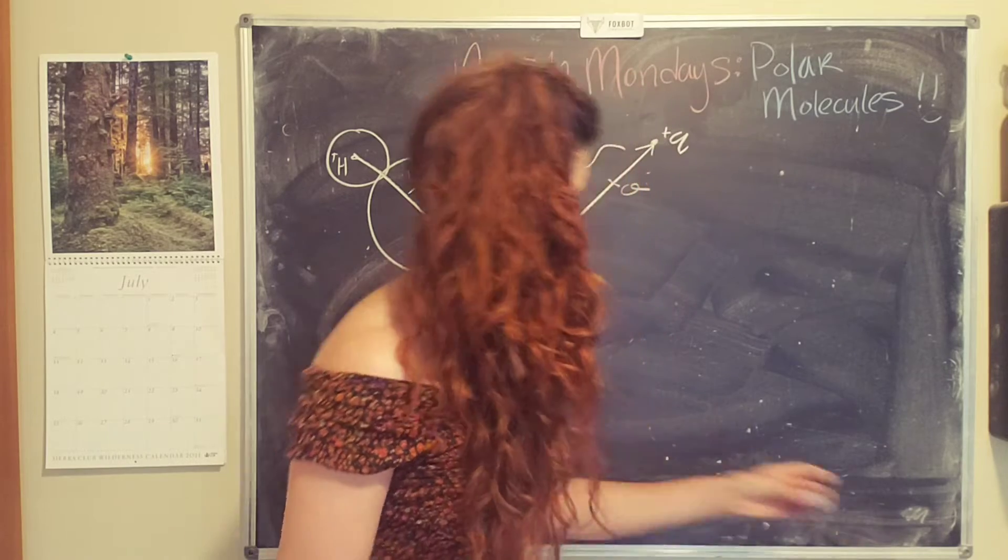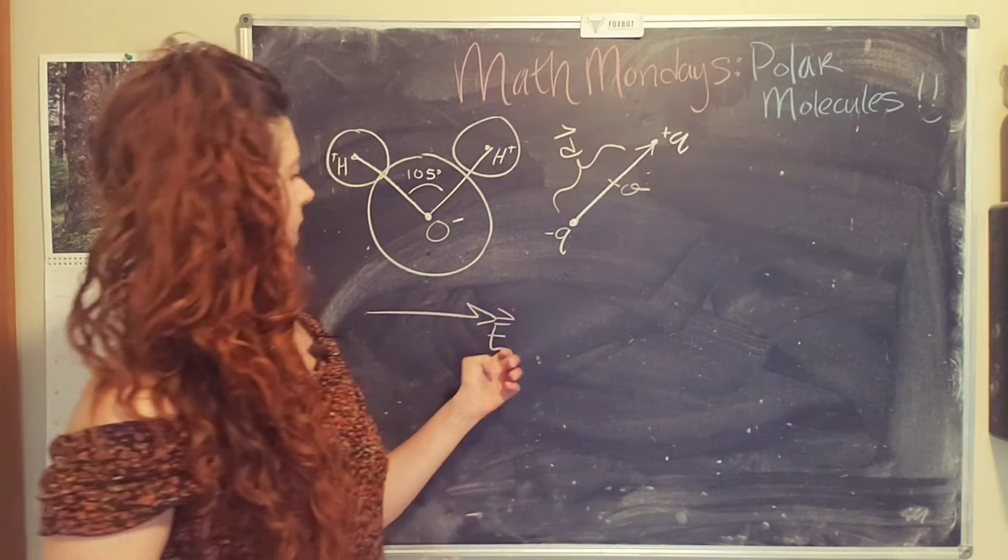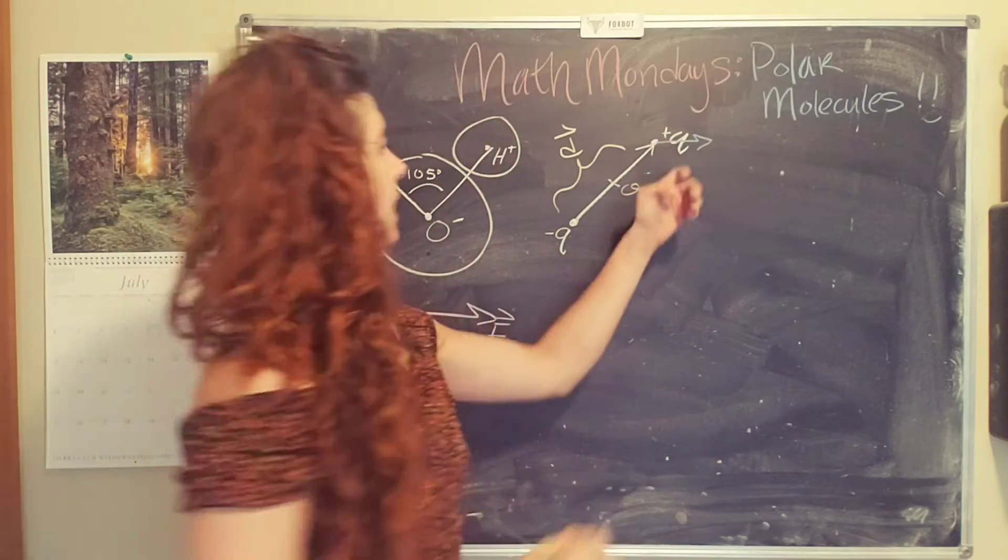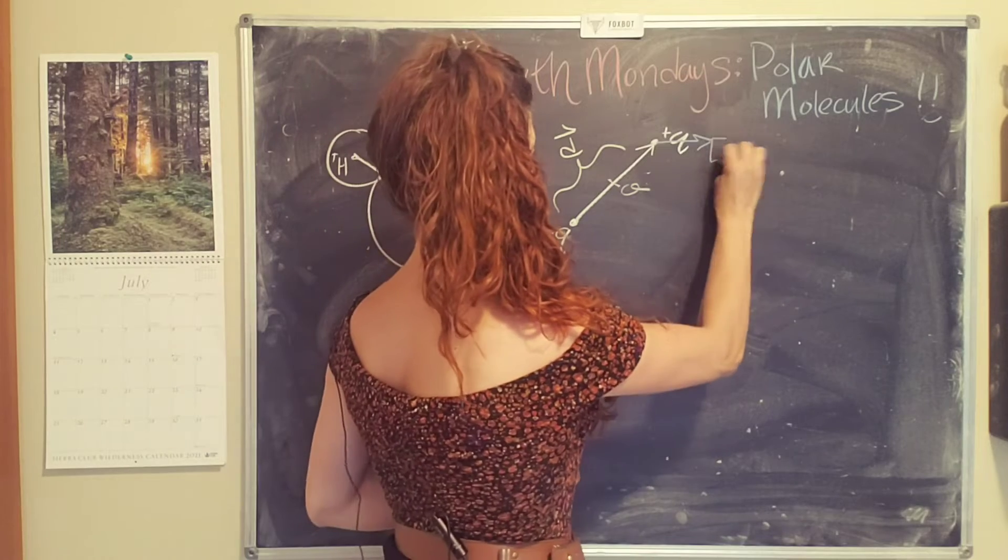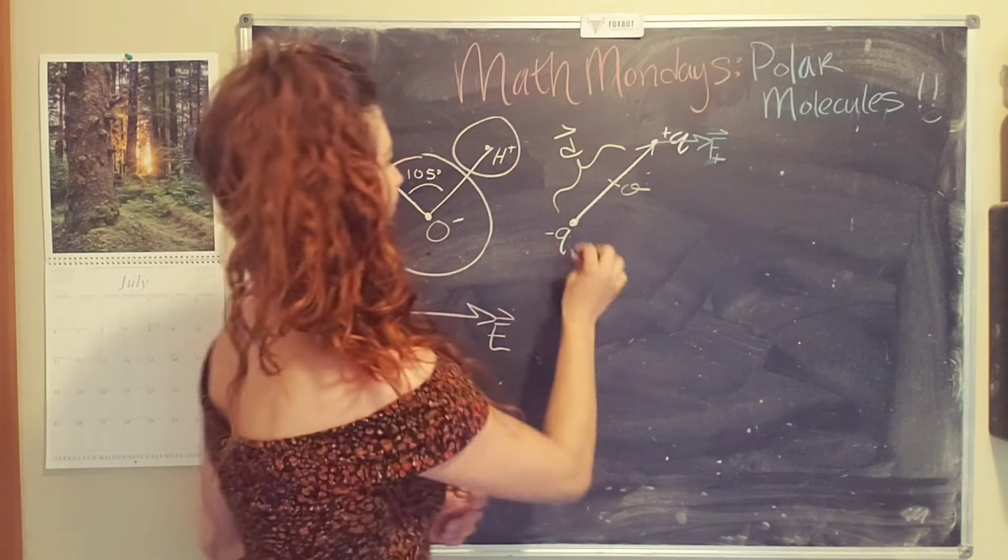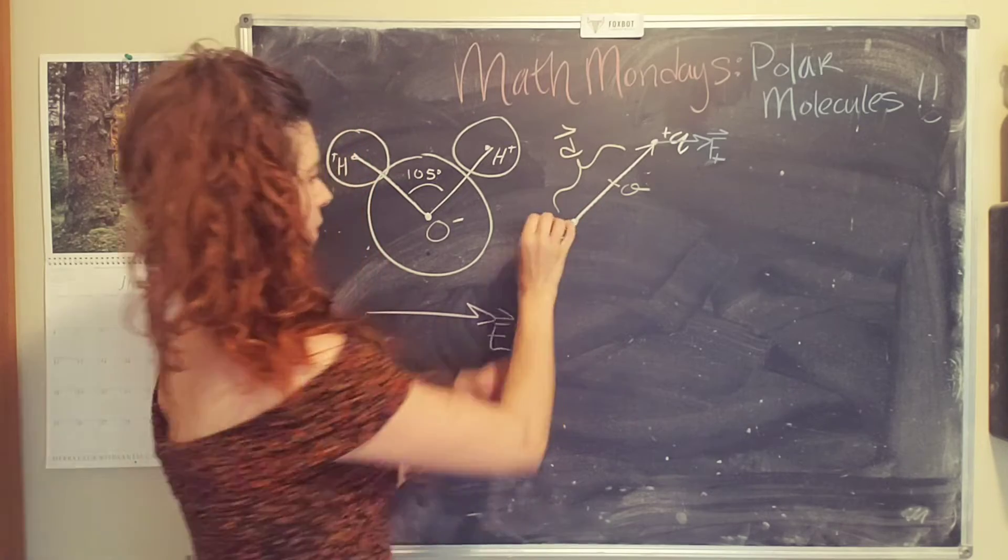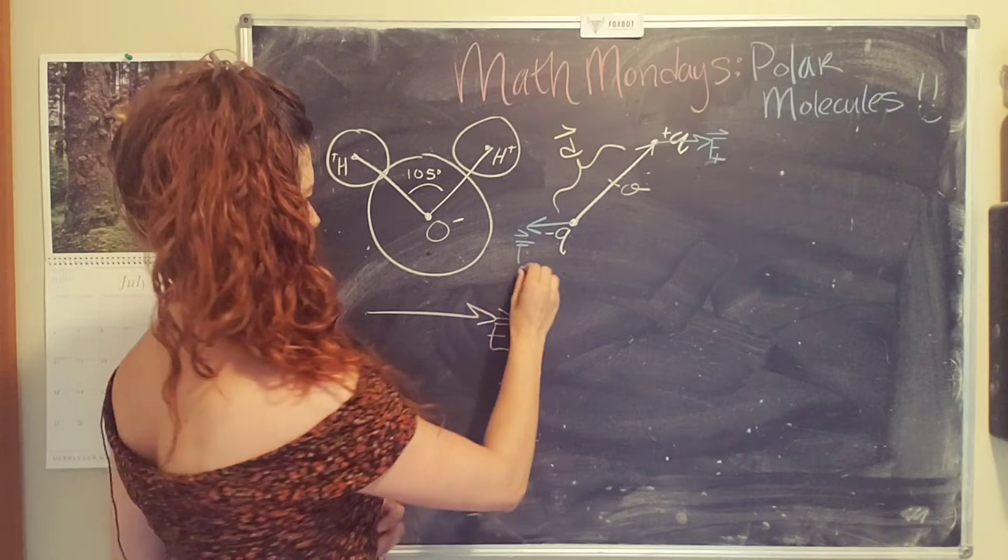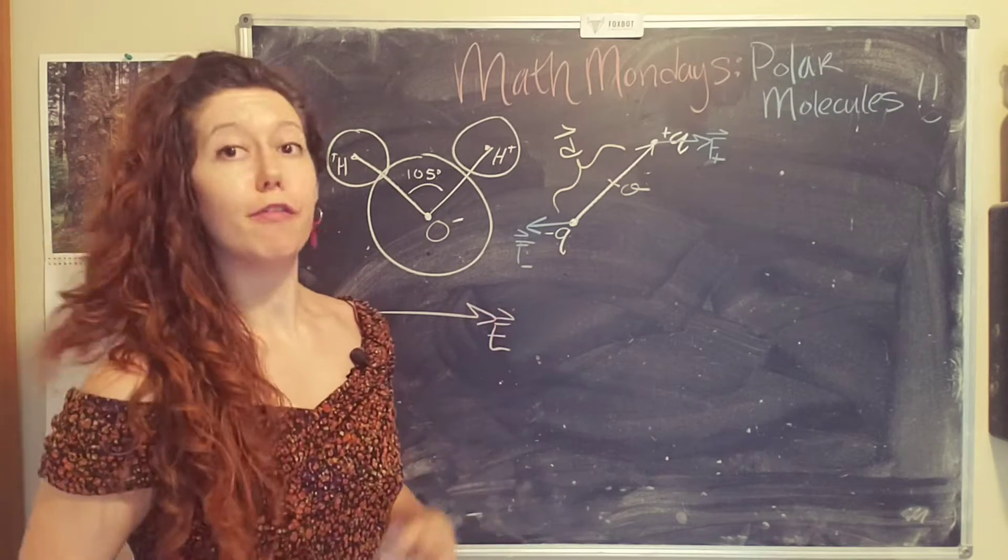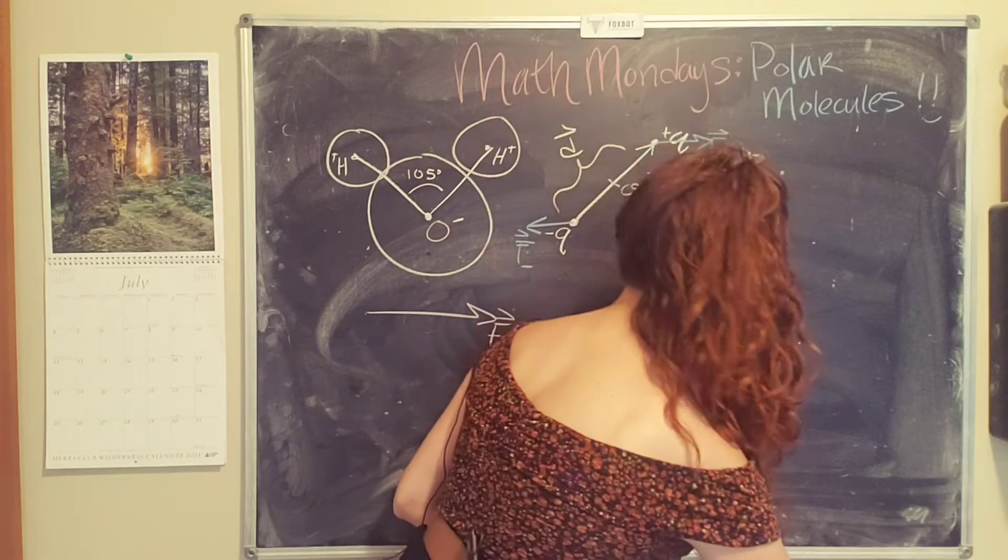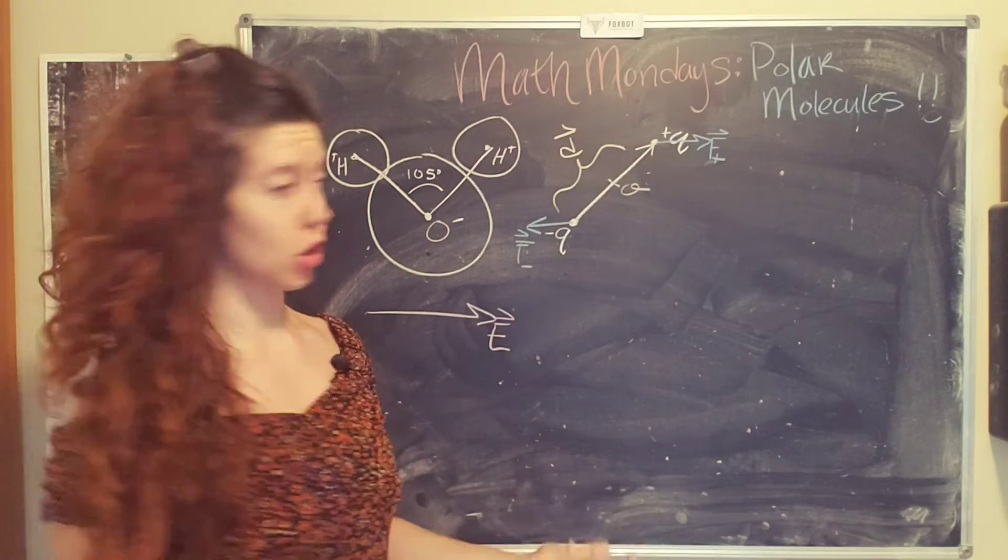So our electric field is going to apply a force in this direction to the positive charge. So we're going to call that F positive. And this one is going to feel a force in the opposite direction because it's a negative charge. And so we're going to call that F negative. But these two are actually equal and opposite because they have the same charges.